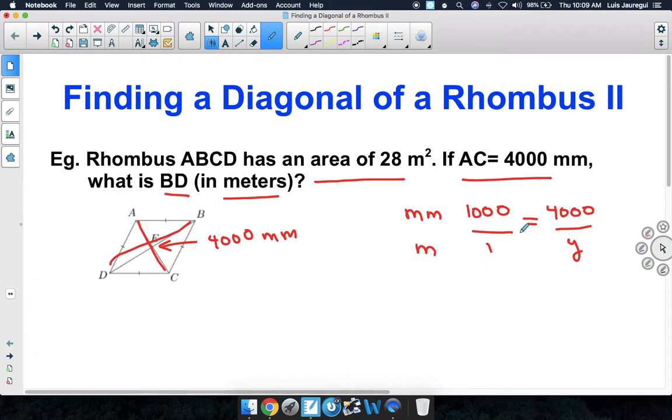Now we have a proportion, so we can simply cross-multiply, and we have 1,000 times Y is 1,000Y, and that is equal to 1 times 4,000, which is 4,000. Let's go ahead and divide by 1,000 on both sides of the equation here.